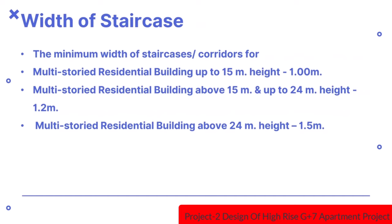Regarding width of staircase: the minimum width of staircase or corridors for multi-storey residential building up to 15m height should be 1.2m; for residential building above 15m or up to 24m in height shall be 1.2m; and for building above 24m in height the minimum width shall be 1.5m.